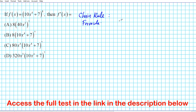Let's write down the chain rule formula, which is meant for differentiating composite functions. If you have a composite function — just two functions composed with each other, as is the case here — the general formula is: you find the derivative of the outer function evaluated at the inner function, times the derivative of the inner function.